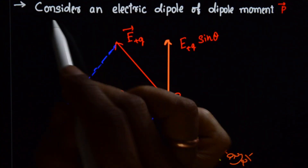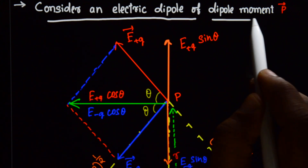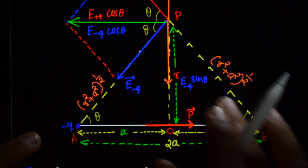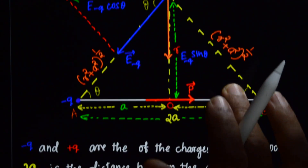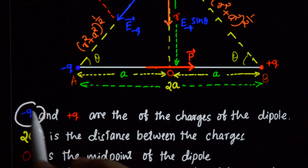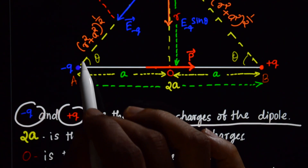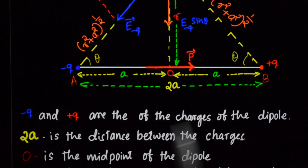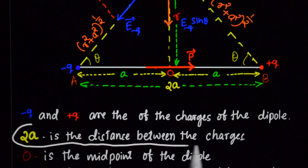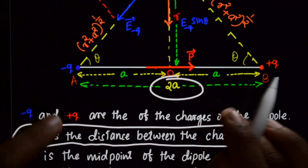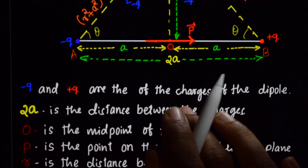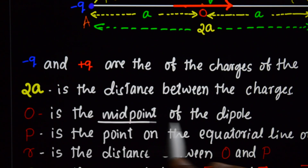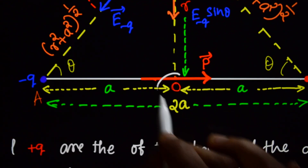First line: Consider an electric dipole of dipole moment vector P. Draw the diagram. Here, minus Q and plus Q are the charges of the dipole. 2A is the distance between the charges — that is the length of the dipole. O is the midpoint of the dipole.